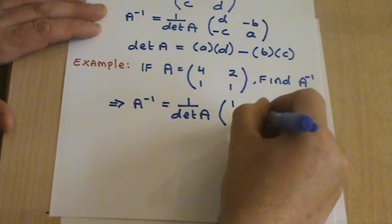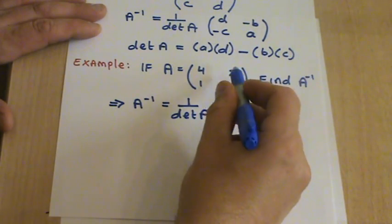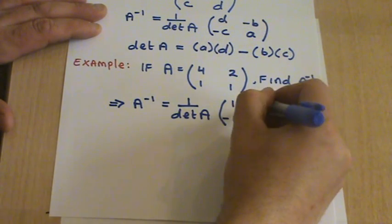And the two entries in the other diagonal, we're just going to change the signs. So you get a minus 1 and a minus 2.